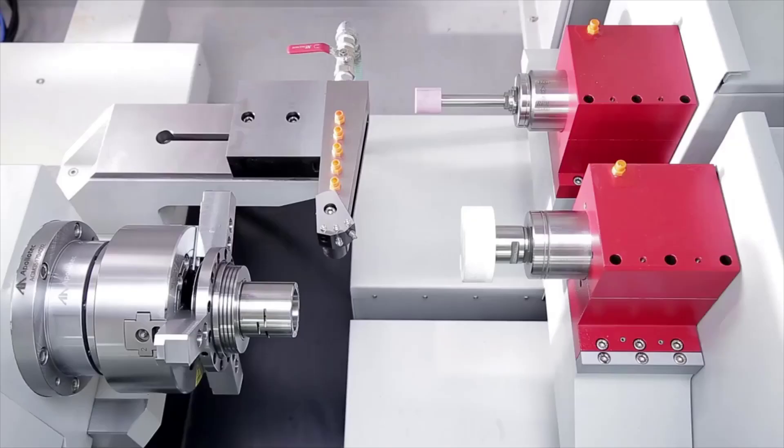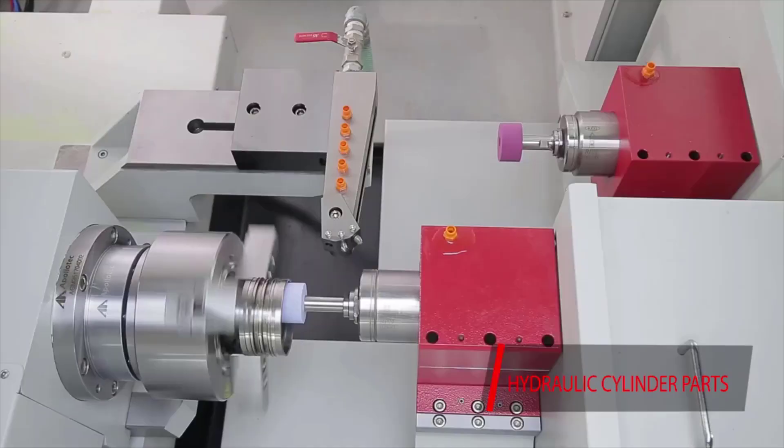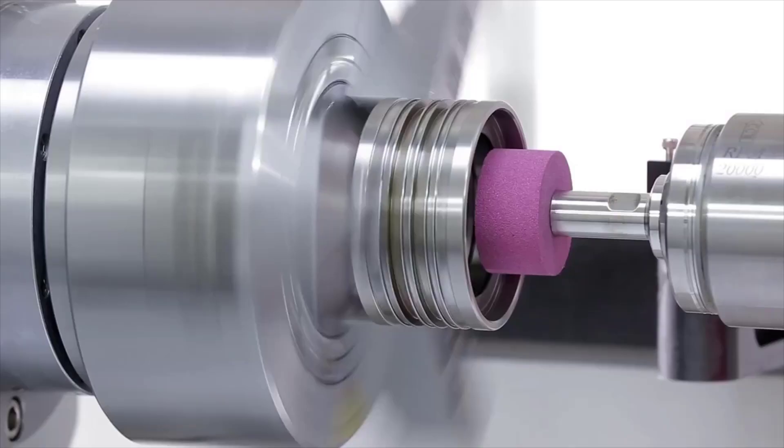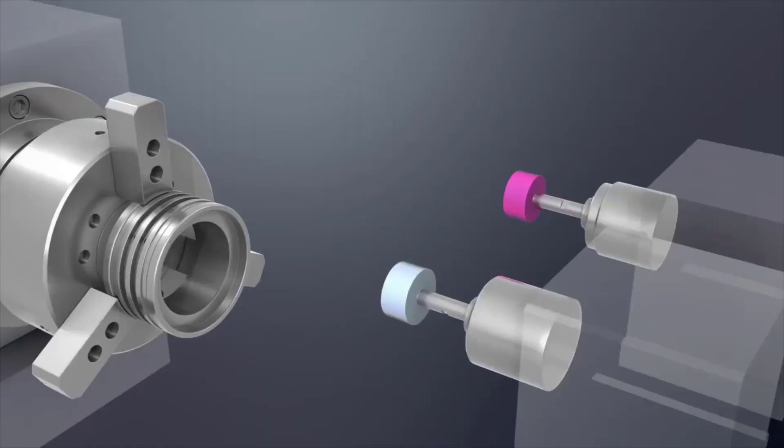Now this is the EGM-350CNC. It's a two-spindle system with OD and ID grinding. It's made for complex parts, grinding parts in one setup.